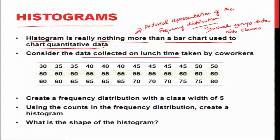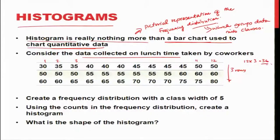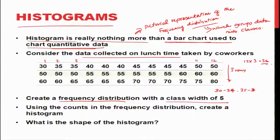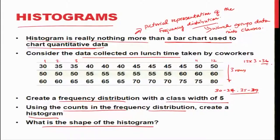We have already seen this lunch time data. There are 12 data values across 3 rows, giving us 36 data values total. We will create a frequency distribution with a class width of 5 — so classes like 30 to 34, 35 to 39, and so on — and then count the observations to create a histogram and see its shape.